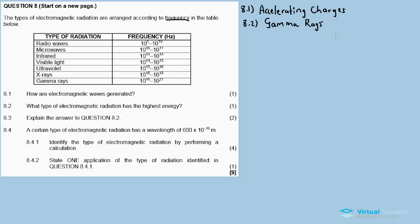To answer 8.2, what type of electromagnetic radiation has the highest energy? Obviously, gamma rays have the highest energy. 8.3: Explain your answer to 8.2. The reason why I chose gamma rays is because energy is always directly proportional to frequency. The higher the frequency, the higher the energy and vice versa.